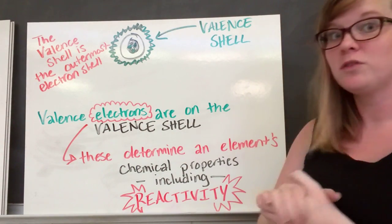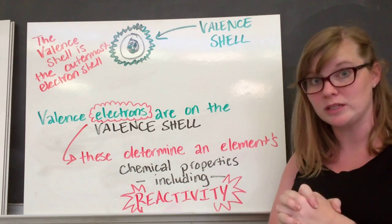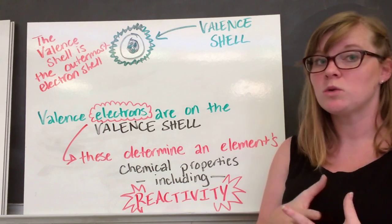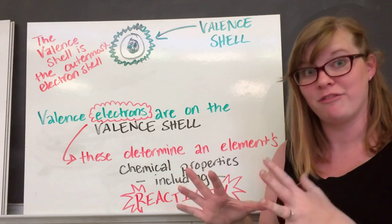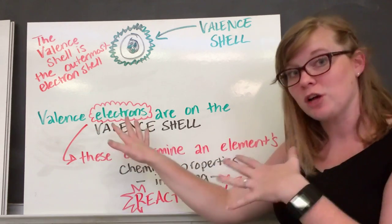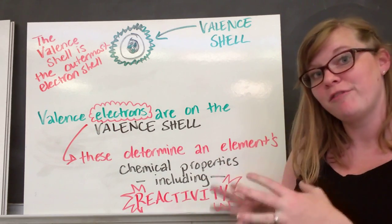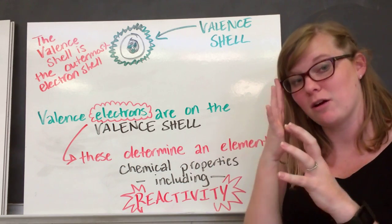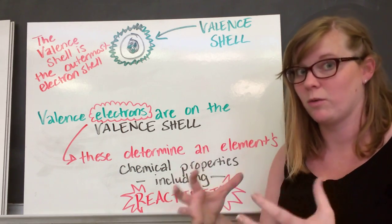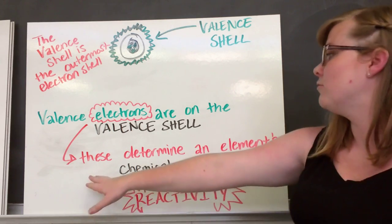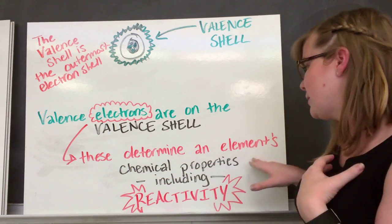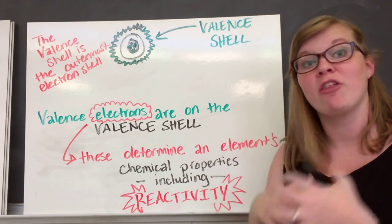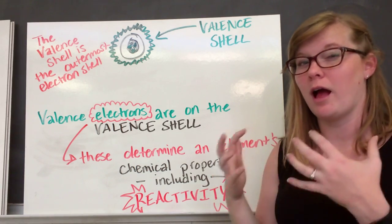And our valence shell — this is really, really important. The valence shell is simply the outermost electron shell, the one farthest away from the nucleus. Valence electrons are any electrons found on the valence shell. Valence electrons are really important because they're going to determine all of an element's chemical properties, including its reactivity — how likely it is to react with other substances, atoms, or elements.